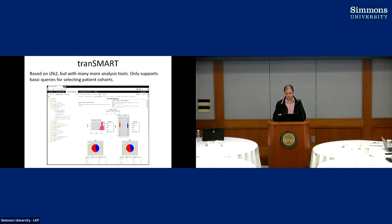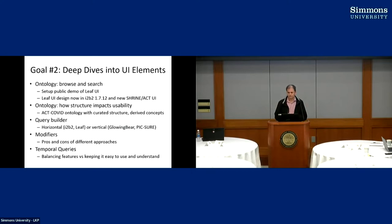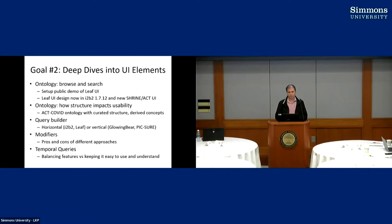Goal two involved taking deep dives into UI elements. After looking across all these different products, we picked out specific things and asked if we could really examine them in depth across different products and come up with the best combination. The first thing we looked at was ontology browsing and searching. We liked the Leaf user interface for that, set up public demos, and that interface has been incorporated into the latest versions of I2b2 and the Shrine ACT UI.